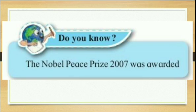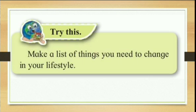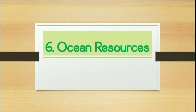Next, 'The Nobel Prize 2007 was awarded to...' — this is a GK question in the 'Do You Know' section — that is also eliminated. Then 'Try This' — this is an activity which has been eliminated. That was all about Chapter 5.